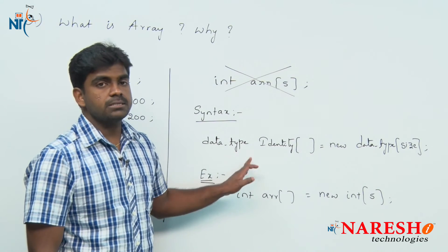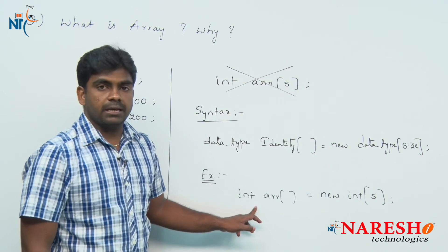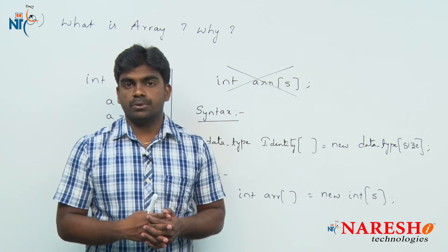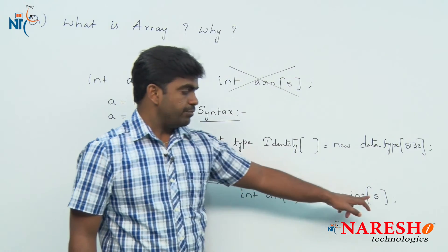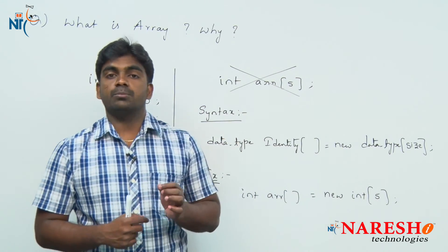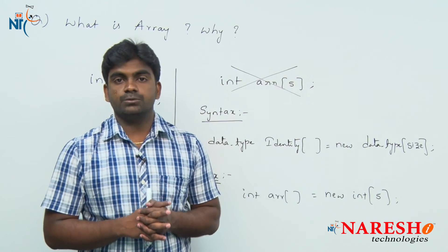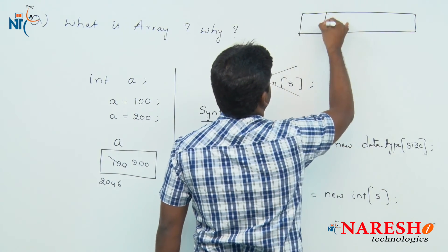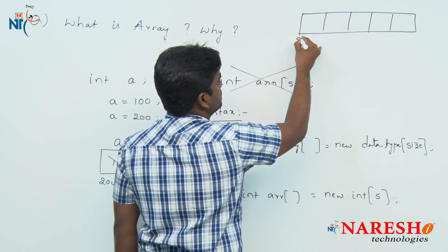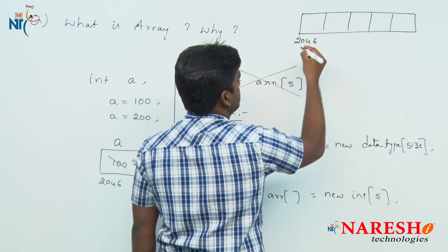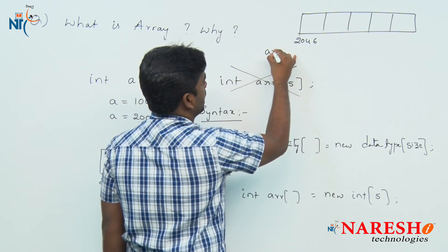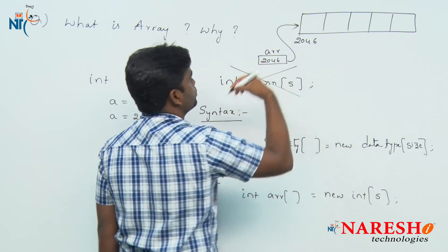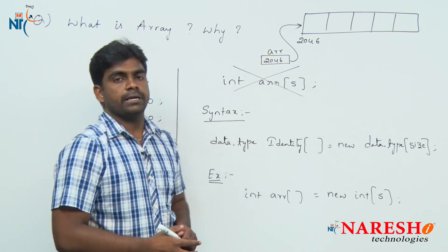Memory will be allocated. How many bytes? Suppose integer occupies 4 bytes memory in Java. Total size is 5, so 5 into 4 equals 20 bytes memory will be allocated to this variable. Here are 5 locations allocated, and the address will be stored into the variable arr. Arr is holding this address, so it is pointing.